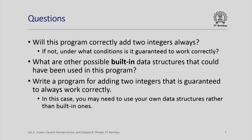Let us look at this program and some questions about it. Will this program always correctly add two integers? Under what conditions is it guaranteed to work correctly? There is an implicit assumption made when we use the int type to declare the variable. The int type has some restrictions on what integers can be represented, so it is not guaranteed that this will always work correctly. There are also other built-in data structures that could have been used in this program.